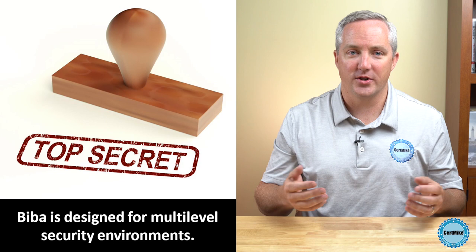The most common example of this is a military organization, where information is classified into levels like confidential, secret, and top secret. Before we dive into those two rules of the Biba Model, I want to warn you that this is very much a theoretical model. Trying to fully implement the Biba Model in the real world would be very, very difficult, if not impossible. But the model is still helpful because it gives us a way to think about the threats to the integrity of our information.